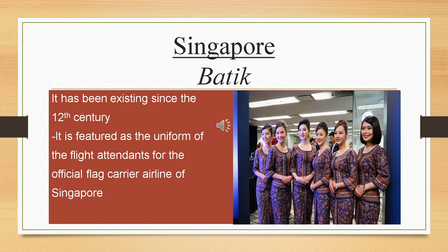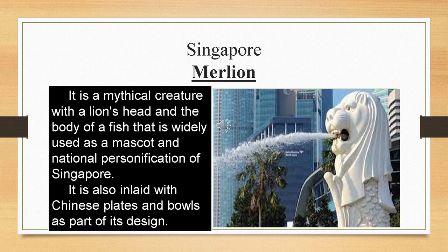Let us now take a peek at the Singaporean batik. It has been existing since the 12th century and is also featured as the uniform of the flight attendants for the official flight carrier airline of Singapore. The craft of Singapore is the Merlion. It is a mythical creature with a lion's head and the body of a fish, widely used as a mascot and national personification of Singapore. It is also inlaid with Chinese plates and bowls as part of its design.